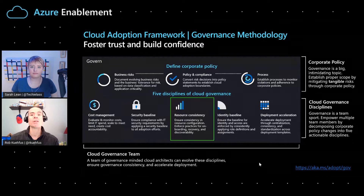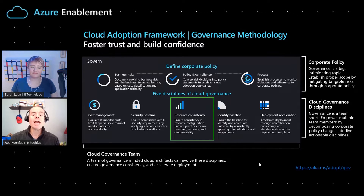That is a fair analogy, and resource consistency is one of the most overlooked of the Cloud Adoption Framework governance methodologies. In the Cloud Adoption Framework we have five disciplines of governance. Resource consistency is around enforcing practices, making sure things are properly configured, and really helping you reduce your support costs. The more consistent you are, the lower the cost or burden on your team to support various different types of resources in Azure.